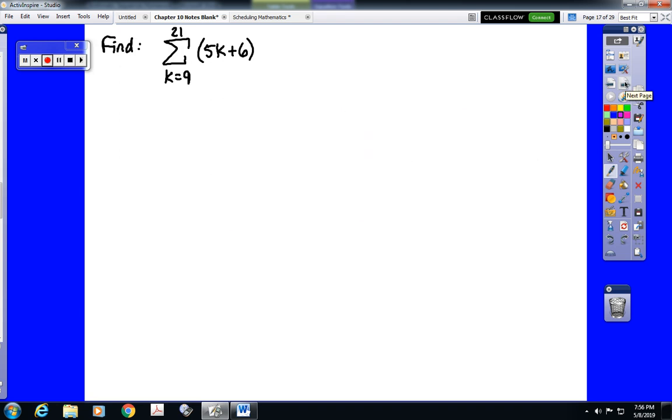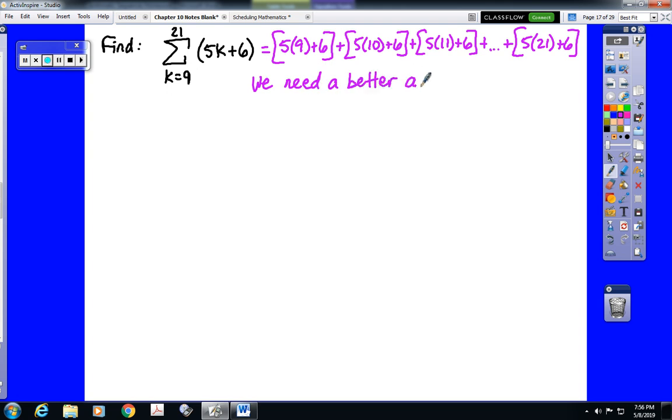Because if we want to plug in from 9 to 21, that is a heck of a lot of numbers. 5 times 9 plus 6, 5 times 10 plus 6, 5 times 11 plus 6. You can see how this is going to get old real fast when we're not supposed to stop until we get to 5 times 21 plus 6. That is a ton of terms. So we need a better approach.